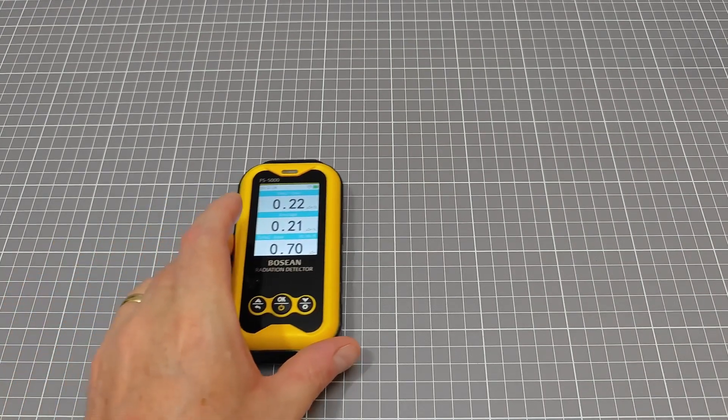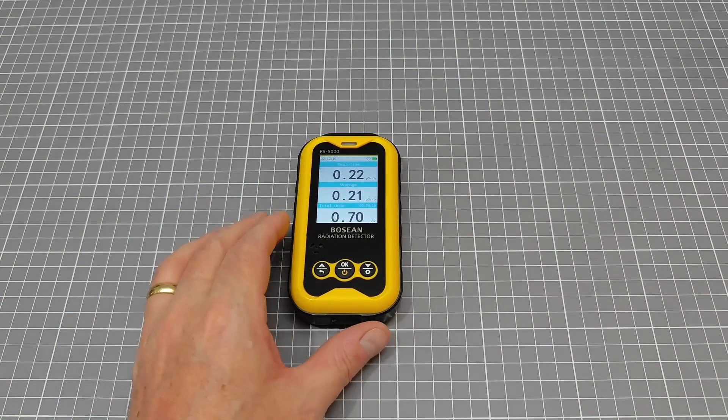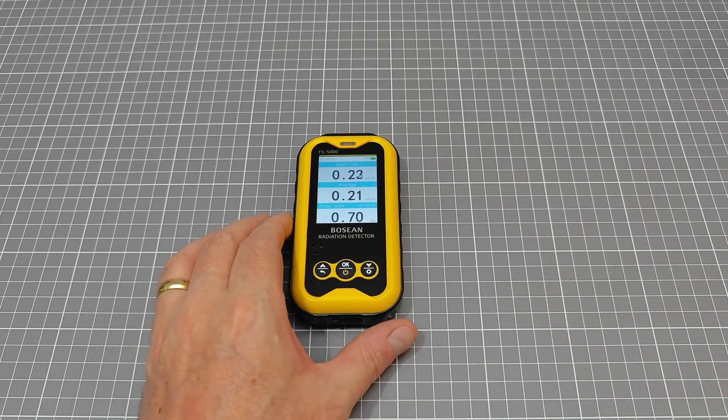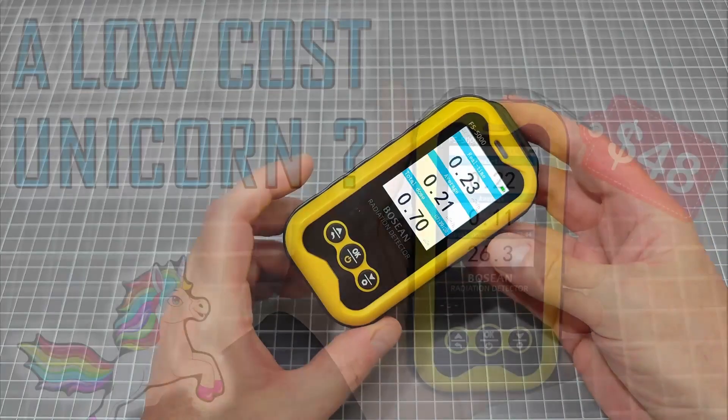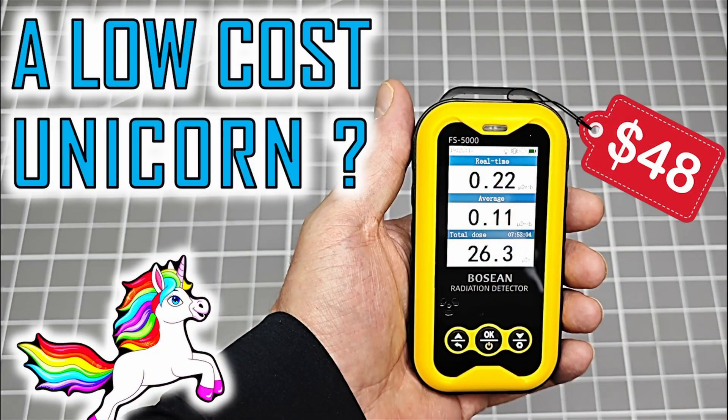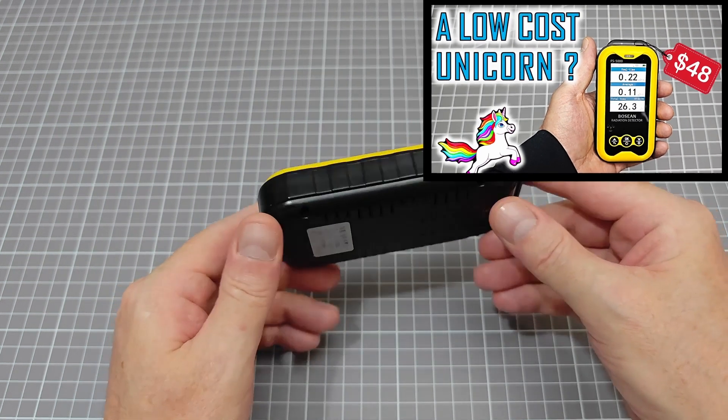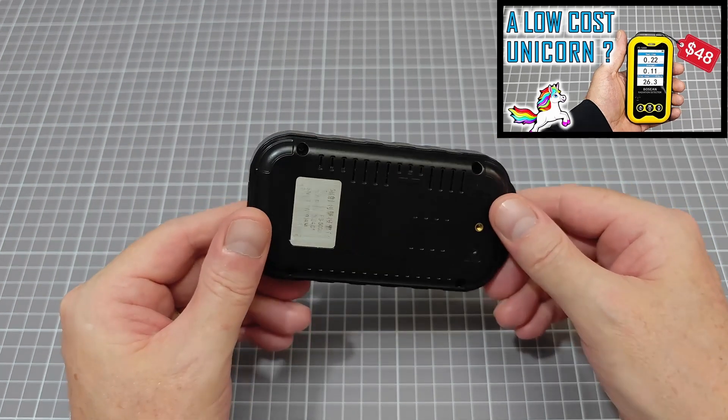For this experiment, we're going to be using a very low-cost Chinese-made Geiger counter, the FS5000. It costs $48 on AliExpress. If you want to know more about this device, there's a review linked in the description below.